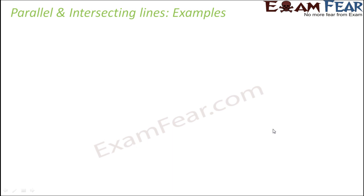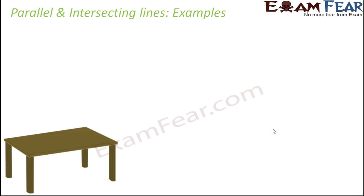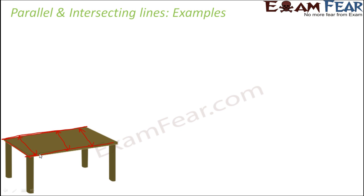Let us look at some interesting examples of parallel and intersecting lines. Consider this table. When you look at the two sides of the table, they represent parallel lines because the distance between them is maintained the same. Had the table been tapered toward one end, these two would not have been parallel lines. But since the distance is maintained the same, we can say these are parallel lines. Whereas when you look at one line and another line that intersect at a point, they have a common point and represent intersecting lines.